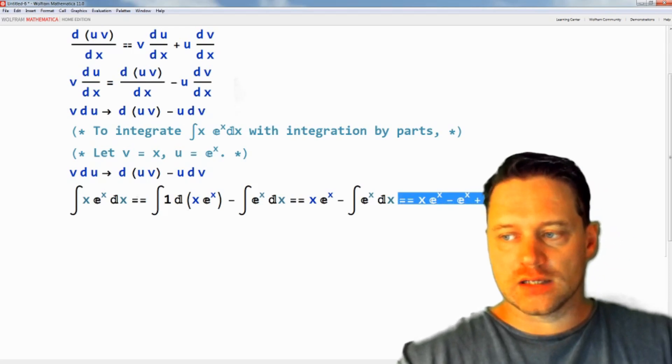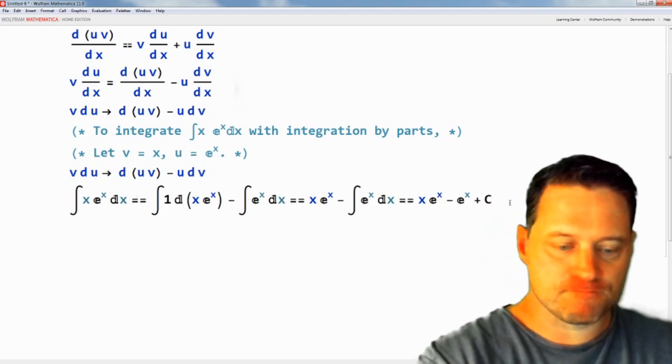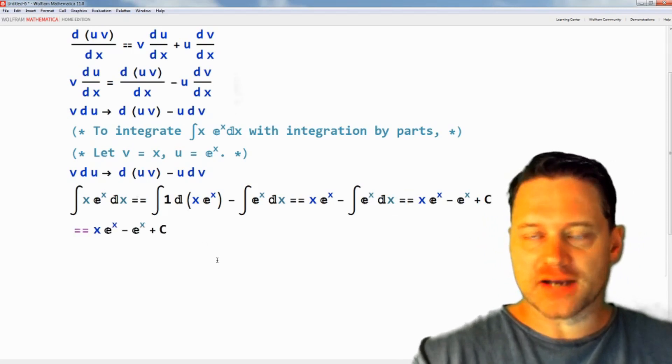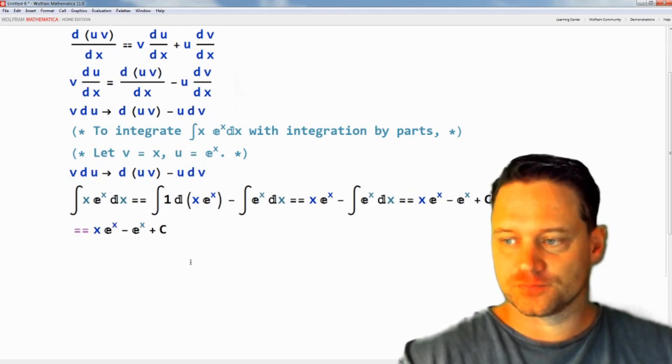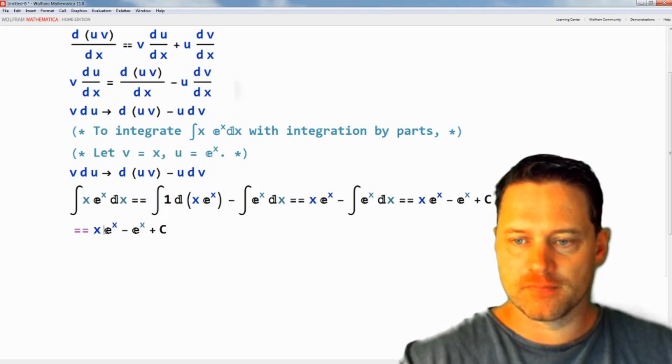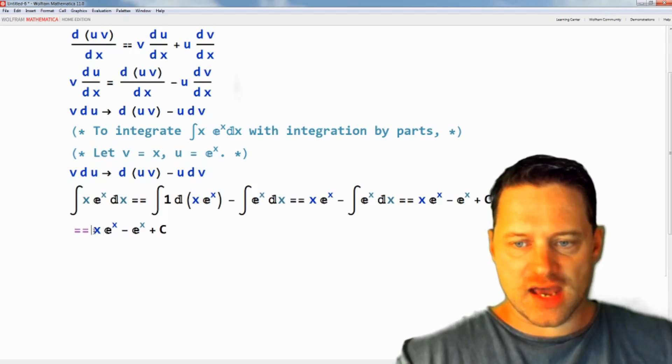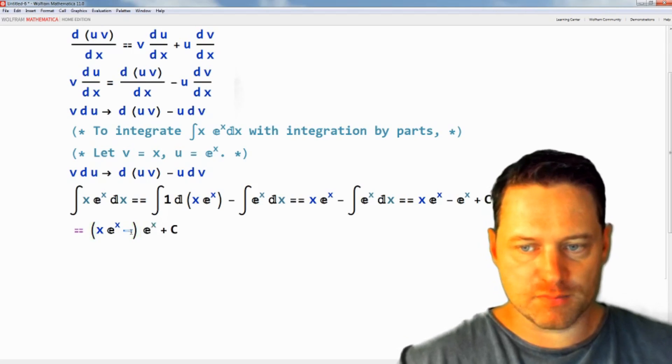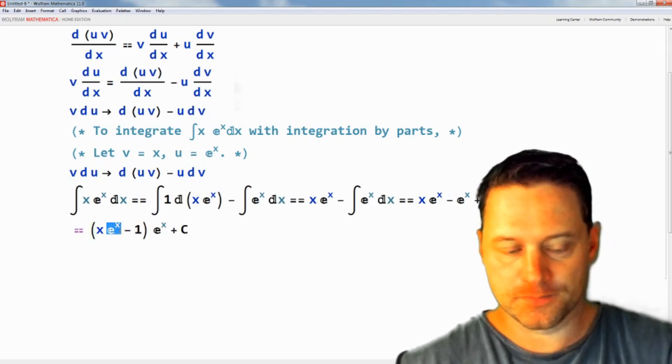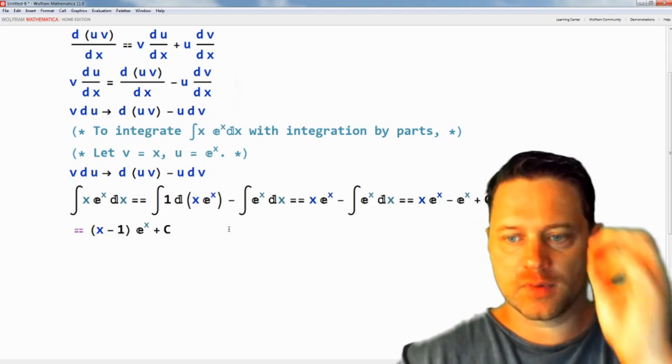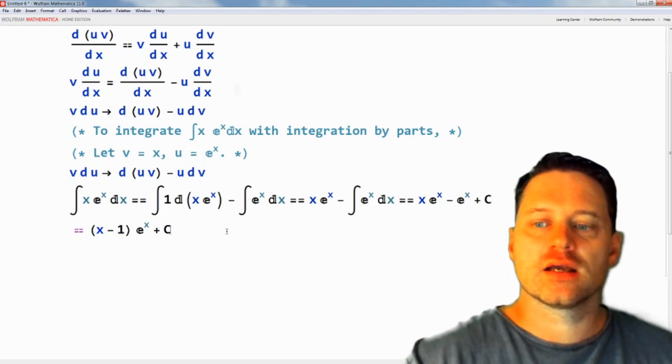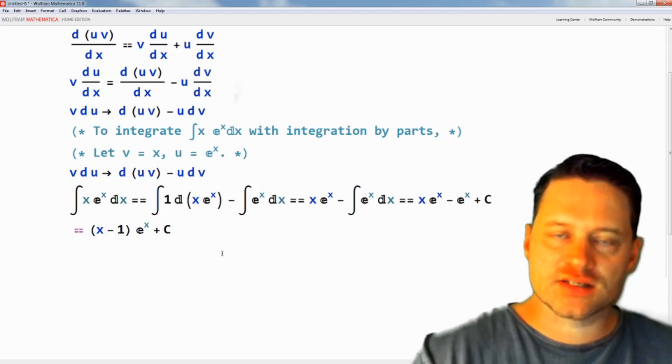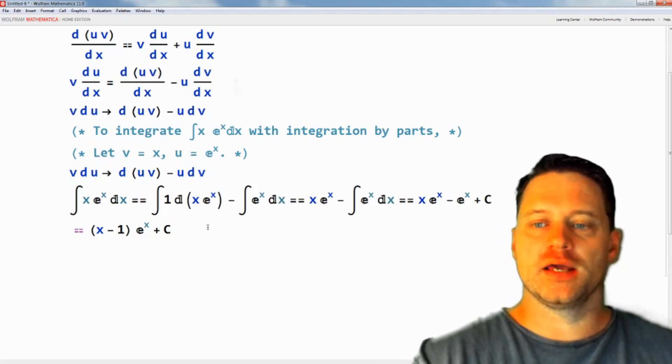Now we can do one little piece of simplifying, which is to factorize e to the x from this expression. When we do that, we will have x minus 1 in brackets. So x minus 1 times e to the x and then plus c is the answer to this integral by parts.